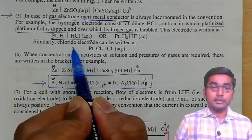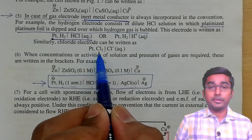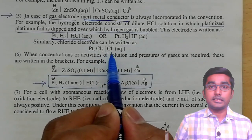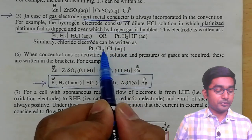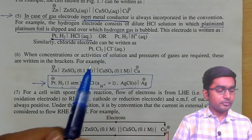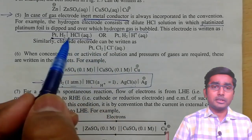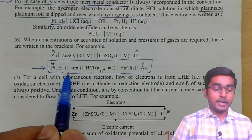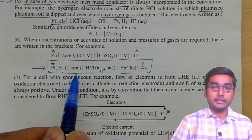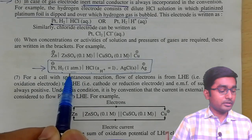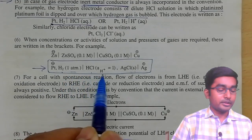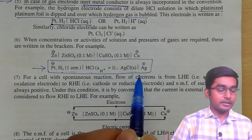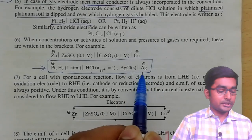For the chlorine gas electrode, similarly: platinum, then chlorine gas — you must write 'gas' in brackets — then Cl⁻ aqueous solution. You can also write the pressure. For the hydrogen electrode, the concentration is written as pressure in atmospheric units. The ionic solution activity is 1, and then the corresponding next electrode is mentioned.